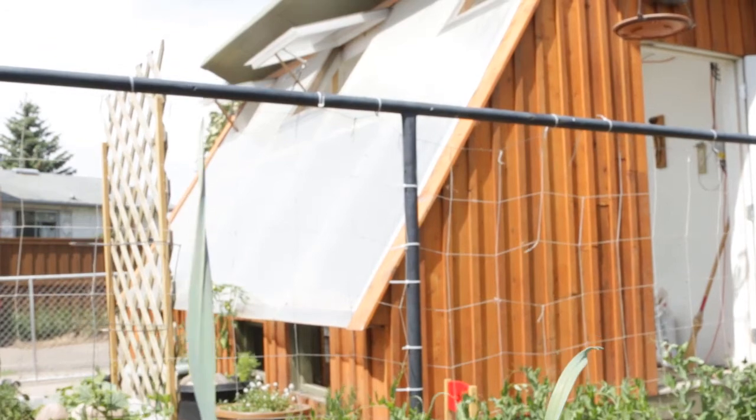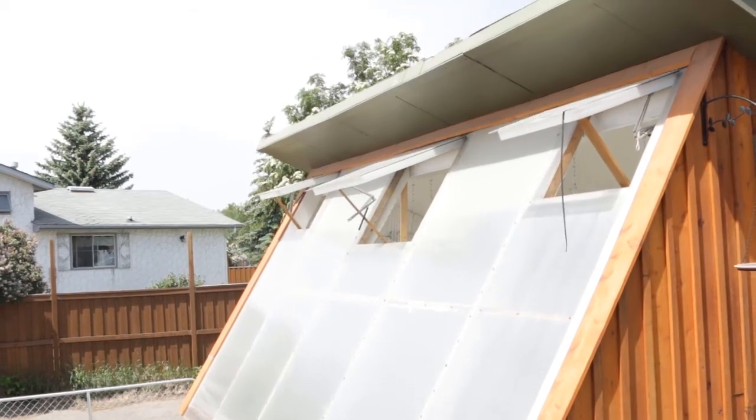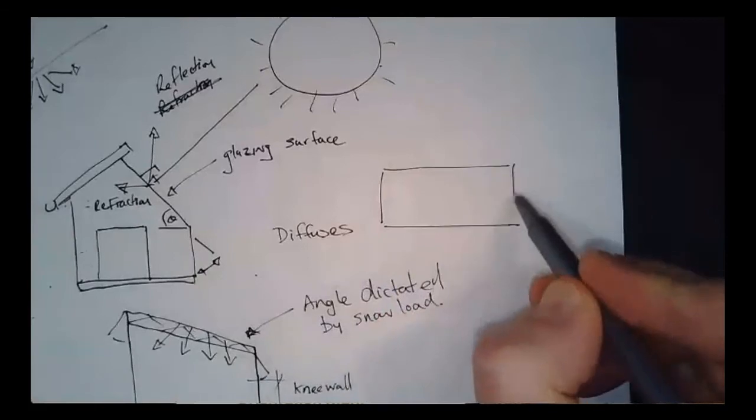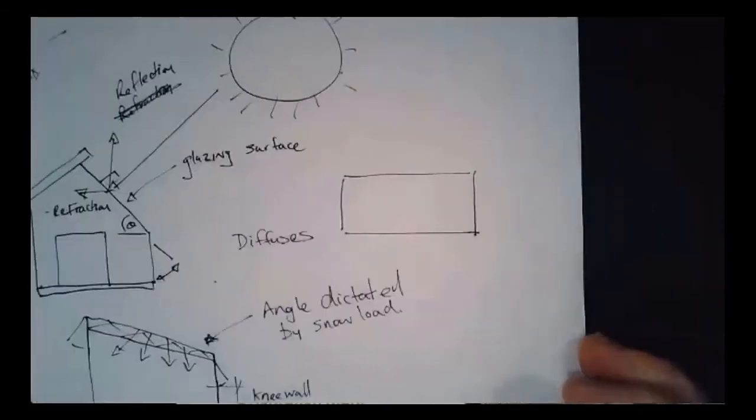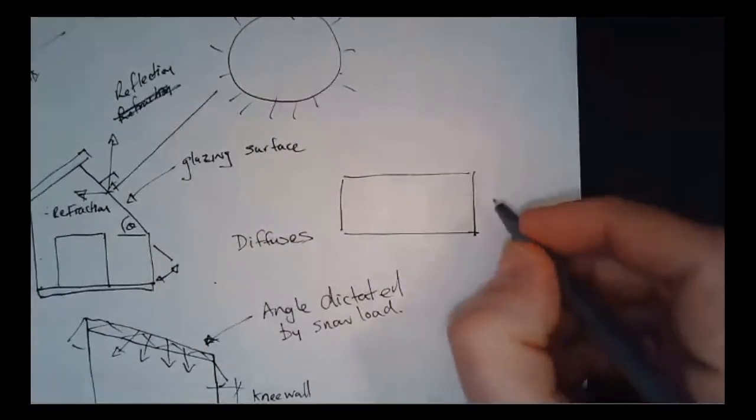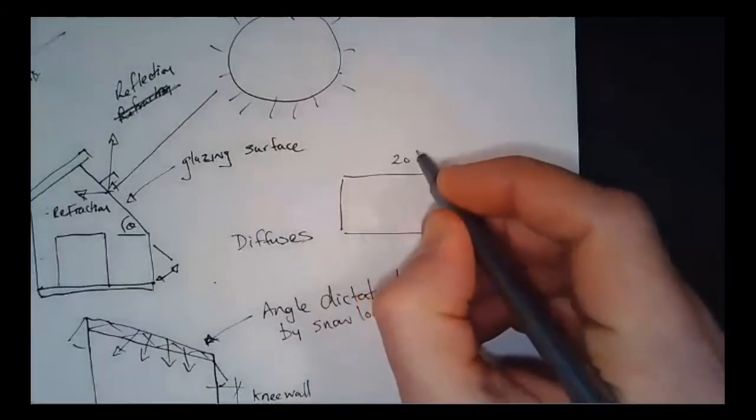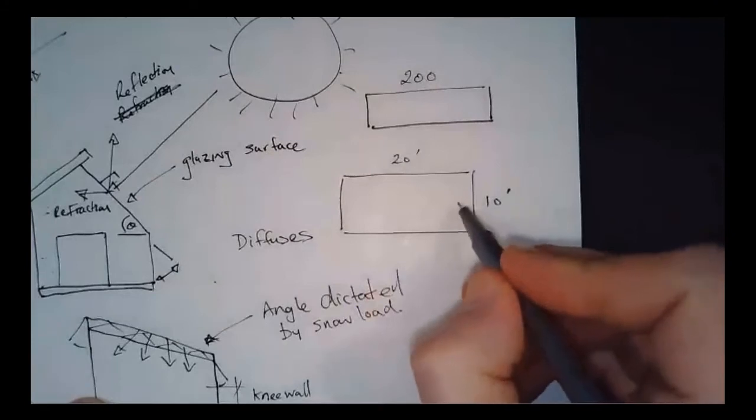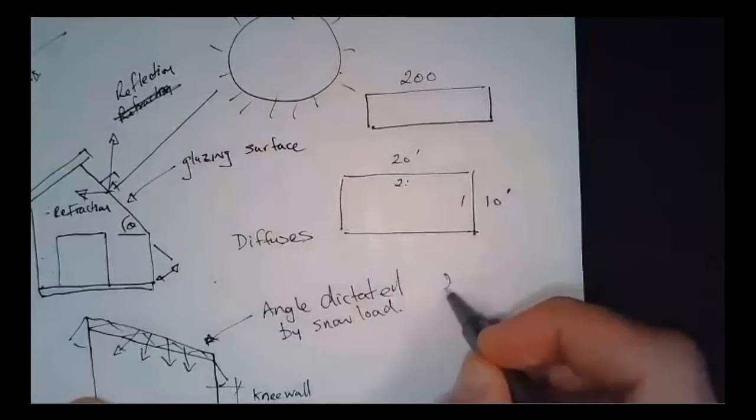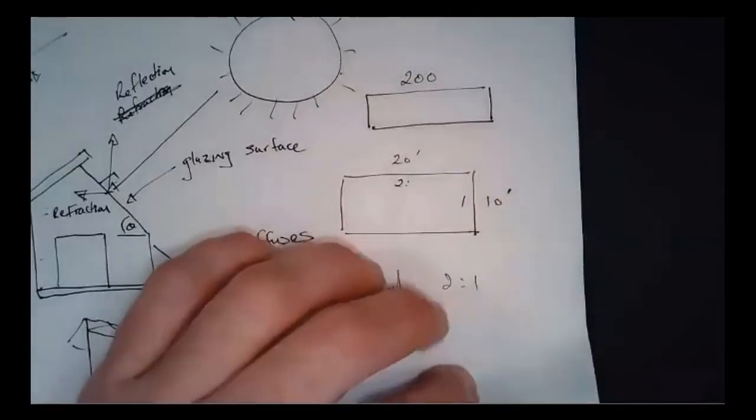And so with the passive solar greenhouse, we typically will start with the aspect ratio. So the aspect ratio is essentially how wide and deep the greenhouse is. So my greenhouse itself is 10 feet deep by 20 feet long. So you'll notice that two to one aspect ratio basically means it's twice as long as it is wide, which is why we say two to one.